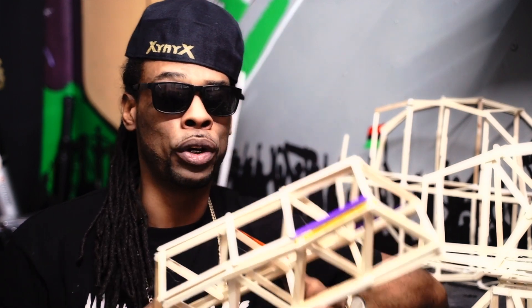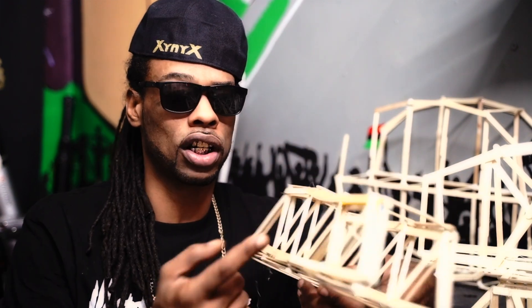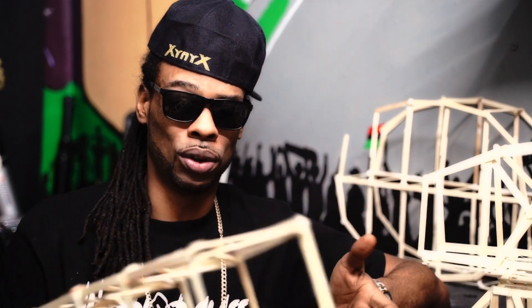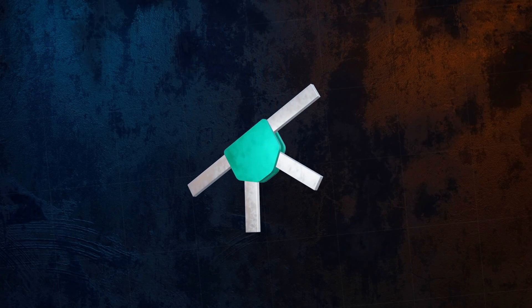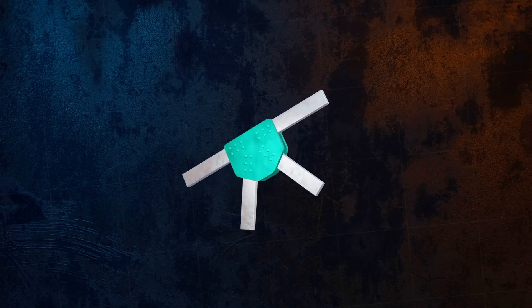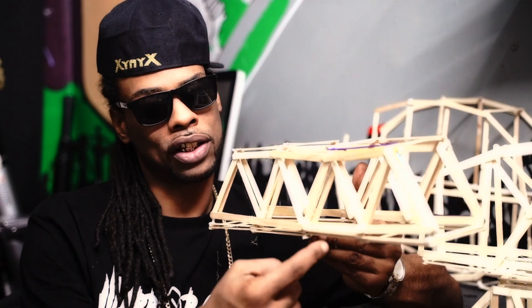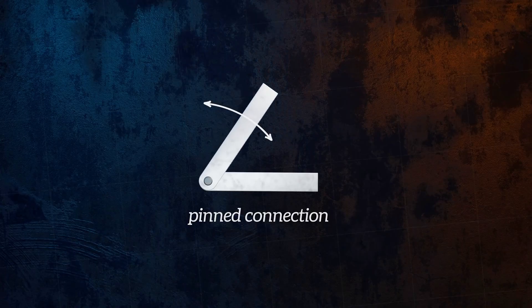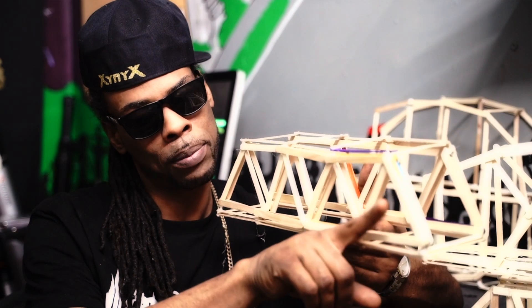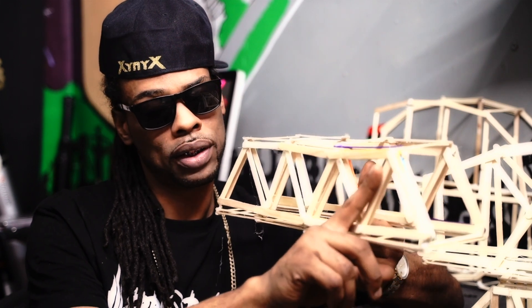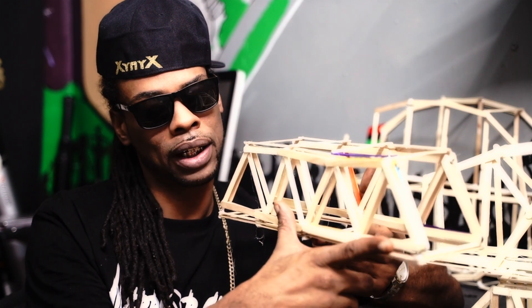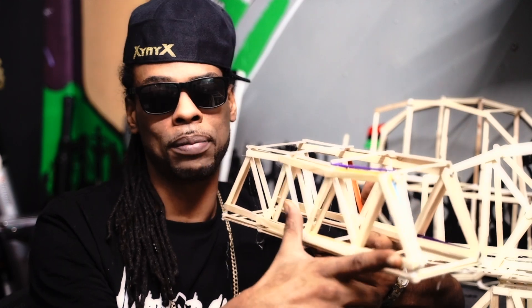With your bridge, the joints are going to be held together by glue, but in a real truss bridge they'll be held together by something called a gusset plate, which holds the pin. Ours are fixed, but in a real truss bridge there would actually be a pin inside the joint that allows the members to move slightly, and the gusset plate would be used to lock the members in.